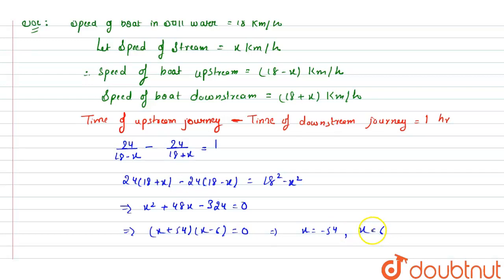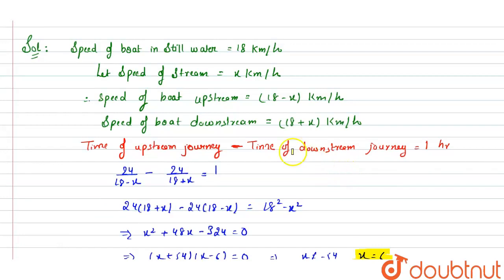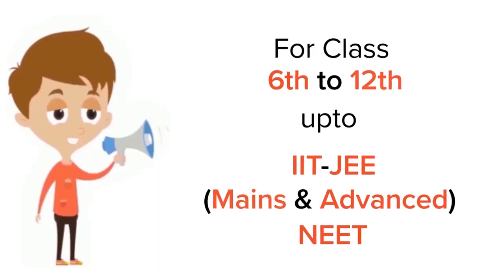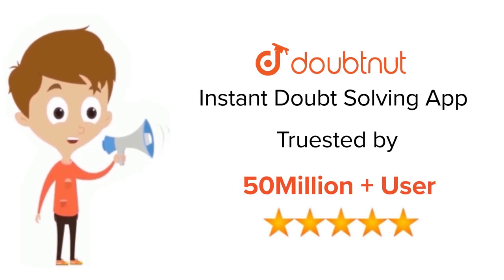As speed can never be negative, x equals minus 54 is not possible. So x equals 6 is our required value. Speed of stream is 6 kilometers per hour — that's our required answer. For class 6 to 12, IIT JEE and NEET level, trusted by more than 5 crore students — download DoubtNet app today.